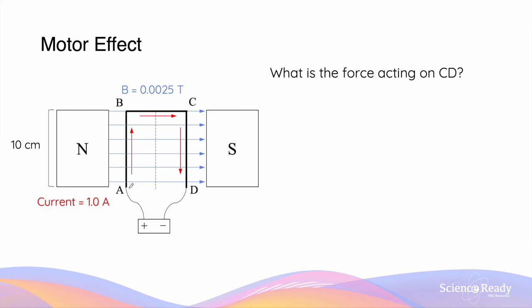Now, what happens if we have a wire wound into a rectangular shape, such that it makes three sides AB, BC, and CD? What will be the force acting on side CD?